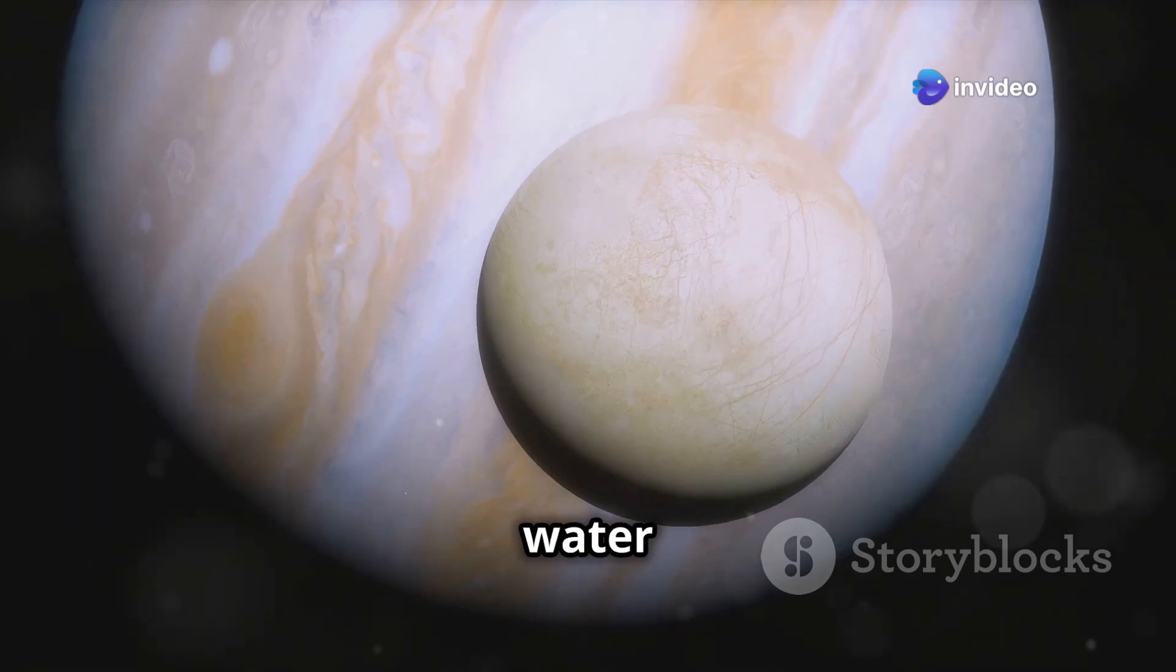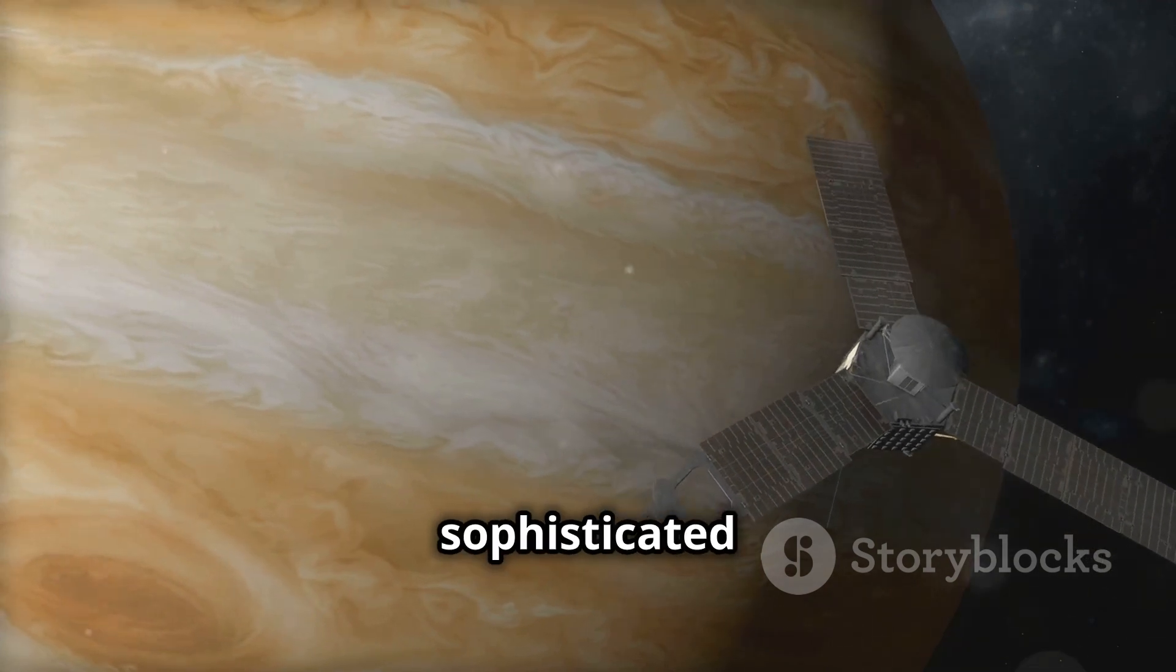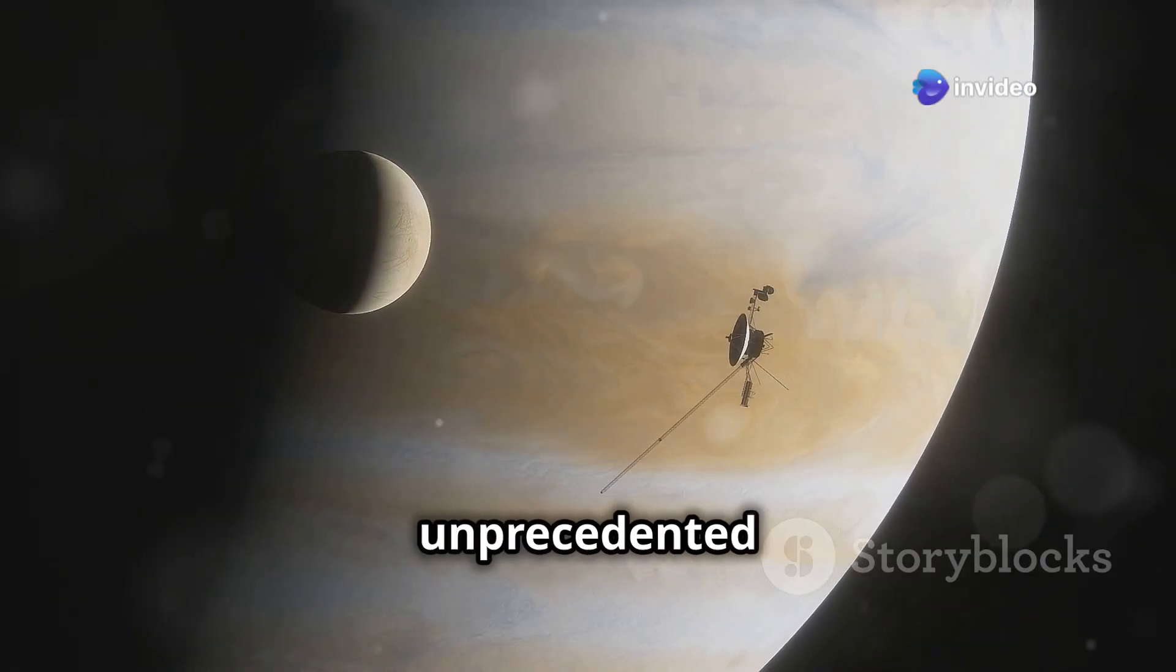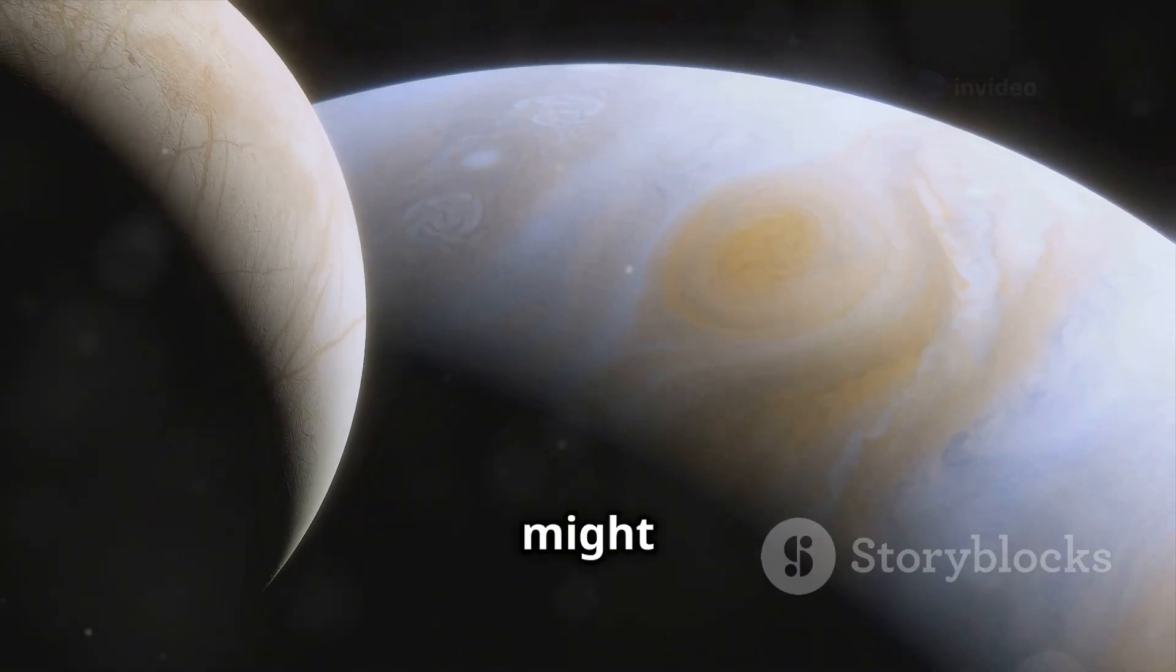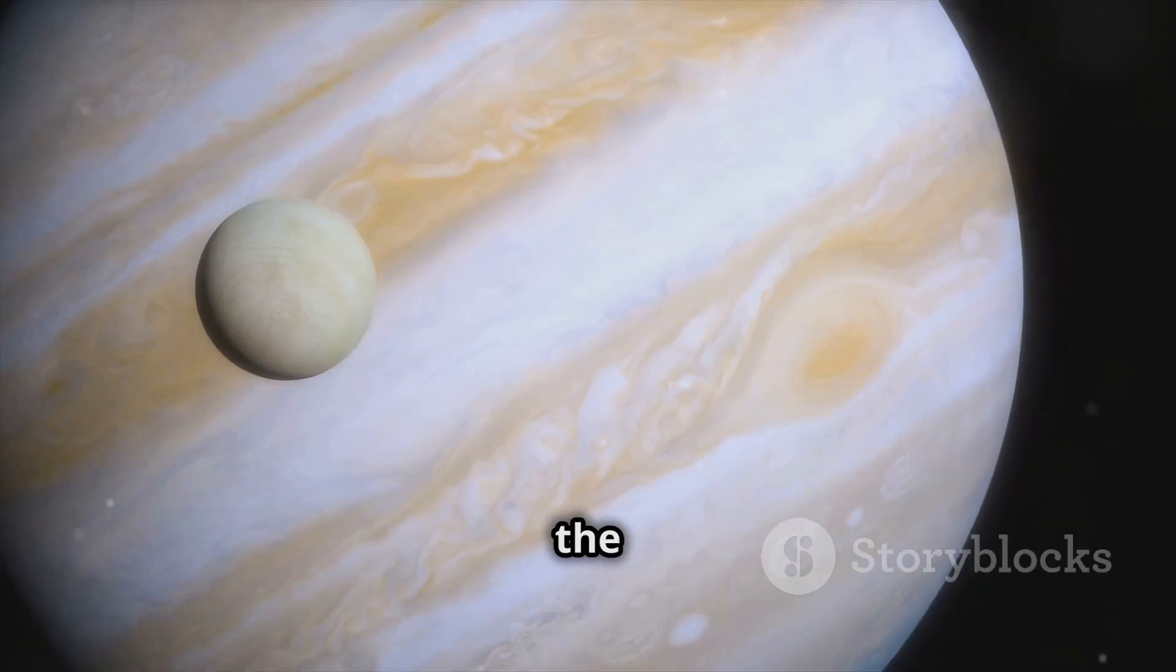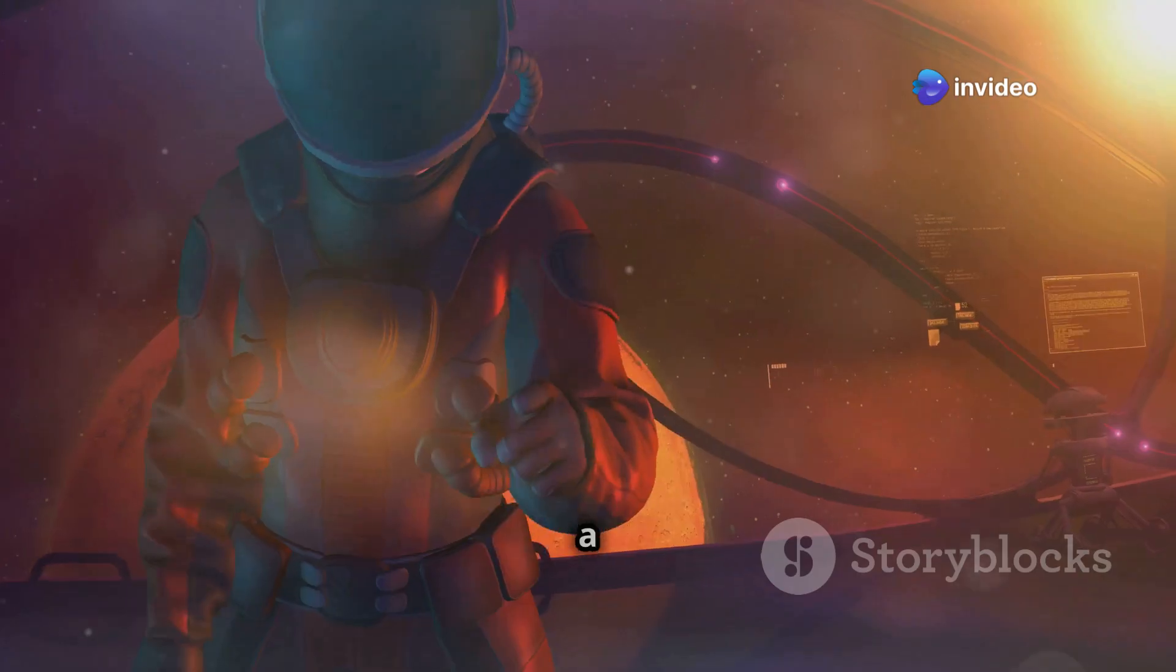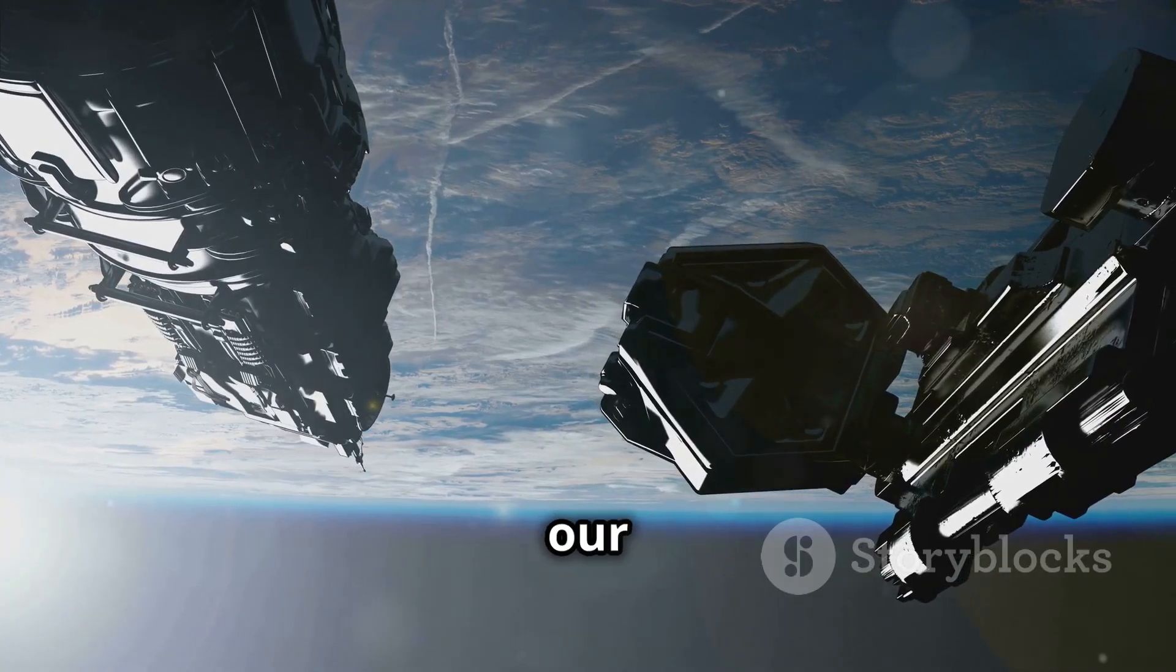The Europa Clipper is equipped with a suite of sophisticated instruments designed to unlock the secrets hidden beneath Europa's icy crust. The Clipper will be mapping Europa's surface in unprecedented detail, analyzing its composition, and searching for plumes of water vapor that might erupt from its interior. These plumes, if detected, could offer us a glimpse into the composition of Europa's subsurface ocean, potentially revealing tantalizing clues about the possibility of life. It's a mission that could rewrite our understanding of life itself, and it's happening right before our eyes.